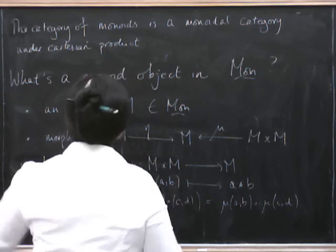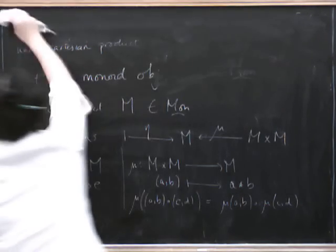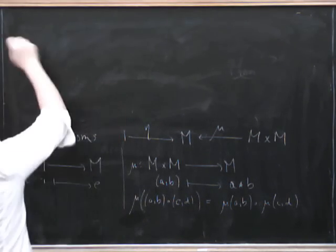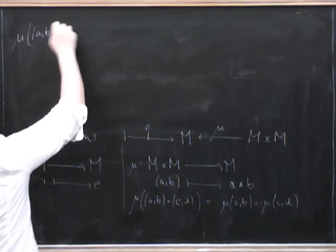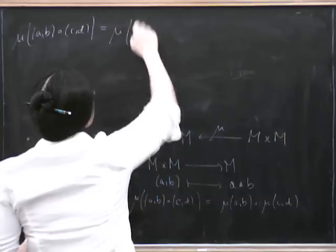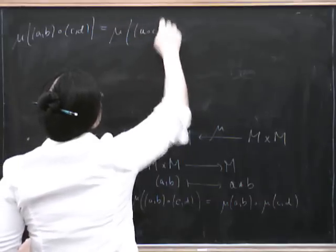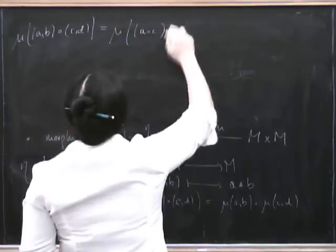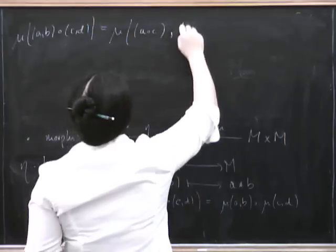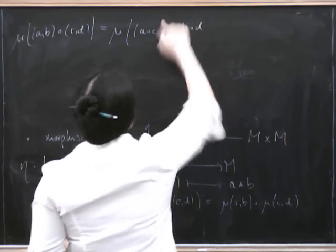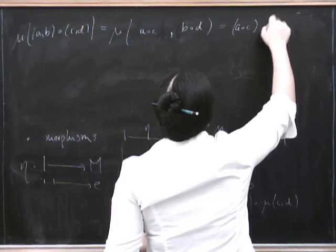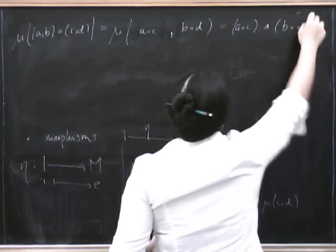Well, I probably need some more space up here. Mu of (A, B) composed with (C, D). Well, remember, we know what the inside is because the inside says compose pointwise. So this is (A∘C, B∘D). And so we take mu of that, which says do (A∘C) star (B∘D). Very good.